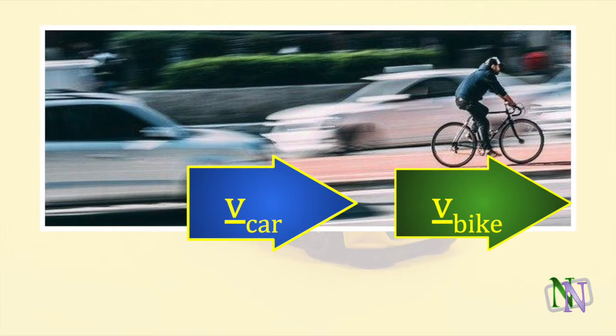If you measure the speed of something when you are moving as well, the result you measure will be affected by your speed. The speed it seems to travel, as viewed from your point of view, is called its relative velocity. For example, the velocity of the bike, as seen by the moving car, is the difference between their velocities.